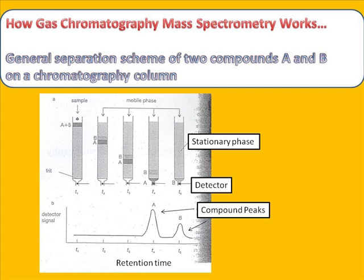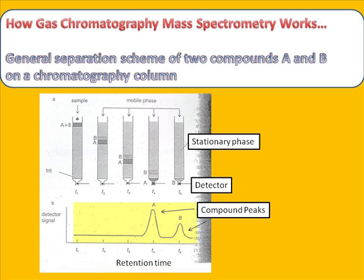Separation of the volatile compounds on the GC column follows the main principles of column chromatography, as shown in this figure. Compounds A and B, for example, are separated on the stationary phase because of differences in their chemical and physical properties. A detector at the end of the column monitors the eluting compounds. When the compounds are running through the detector, a change in the detector signal occurs, and this change is monitored in the form of peaks. The baseline and the peaks together represent the chromatogram. Each compound reaches the detector at a specific time after the sample has been loaded onto the column, and this time is called the retention time, which is specific for a particular compound.